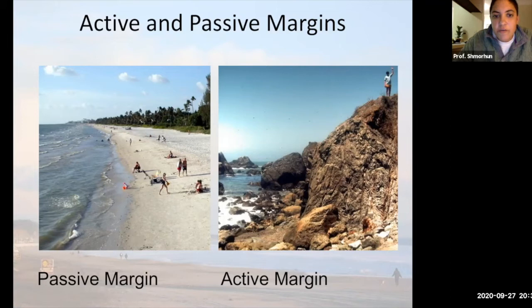If you're familiar with the Outer Banks of North Carolina, you can get these nice low-lying, low-profile, low-gradient, flat, sandy beaches. Those are characteristic of passive margin coastlines.